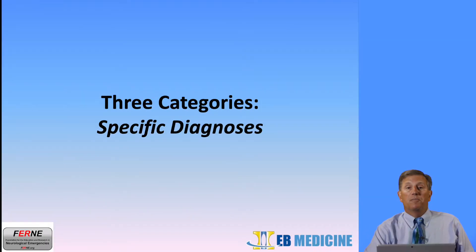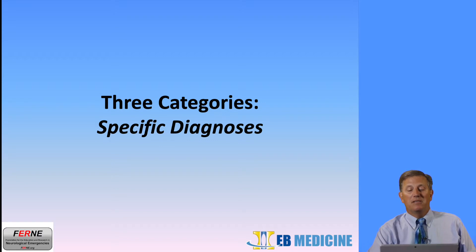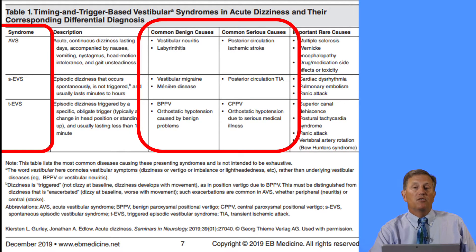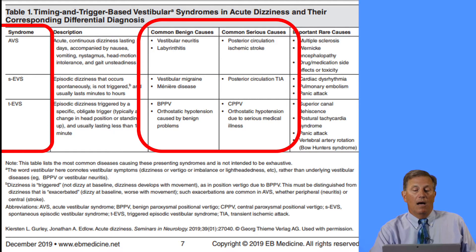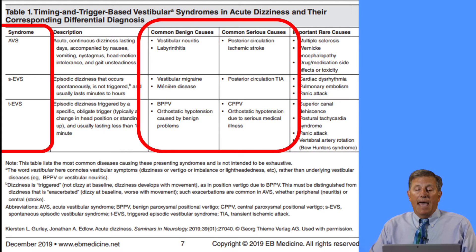Let's talk about our specific diagnoses. We have three strata and six diagnoses. The three strata are: acute vestibular syndrome, spontaneous episodic vestibular syndrome, and the triggered episodic vestibular syndrome, which leads to these specific diagnoses.